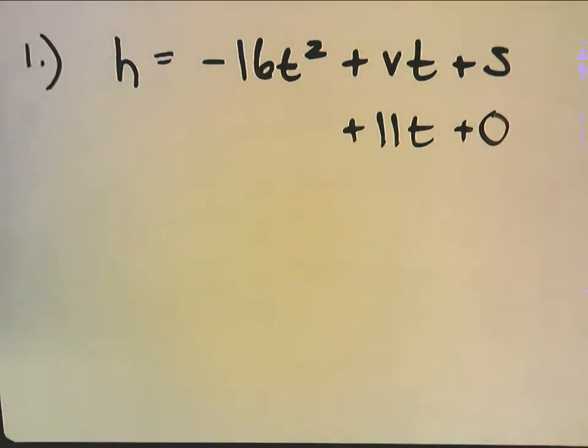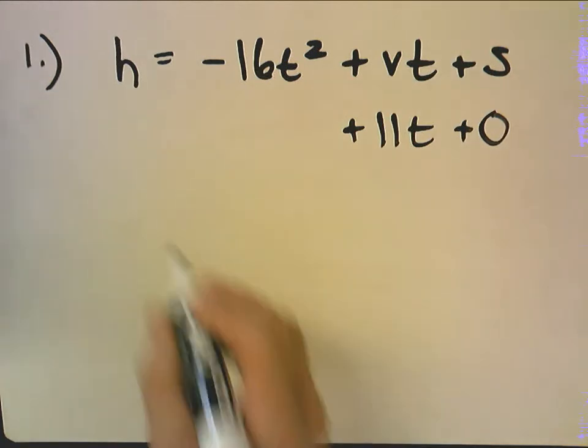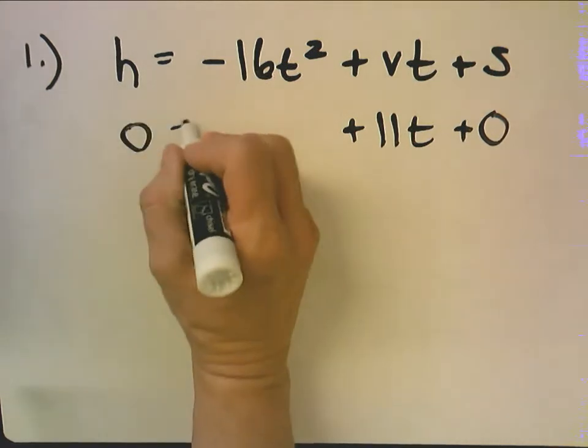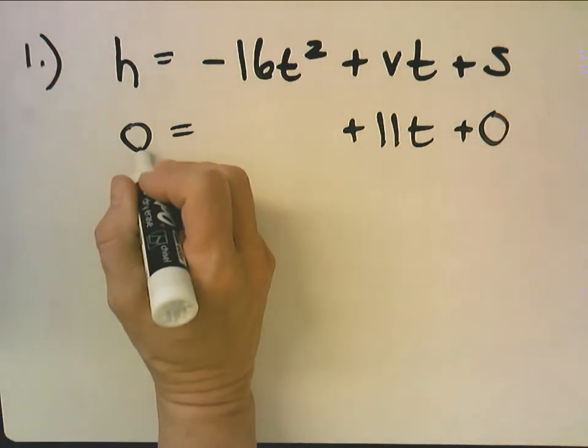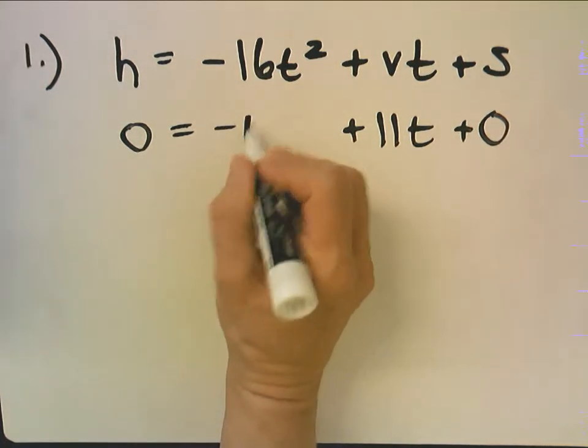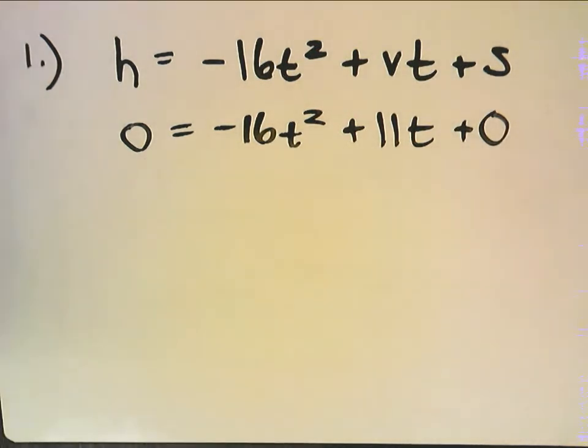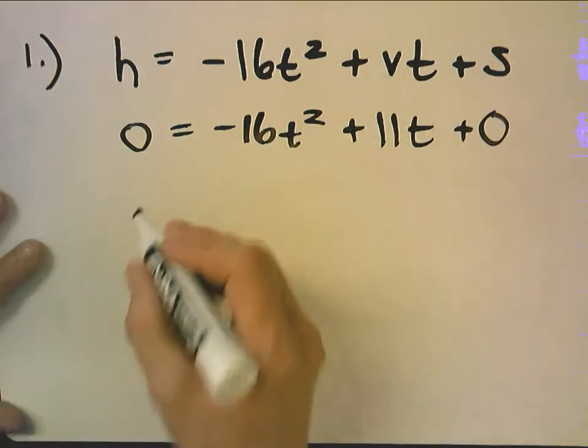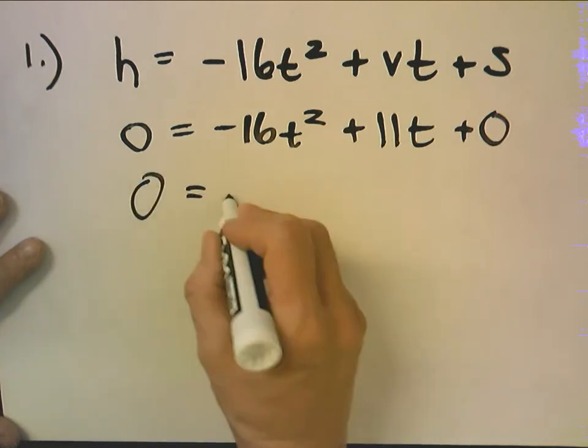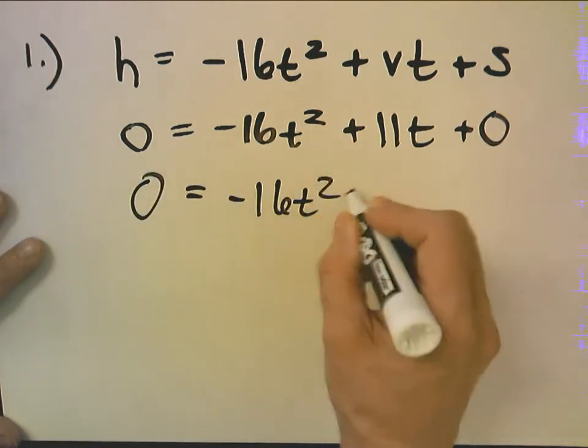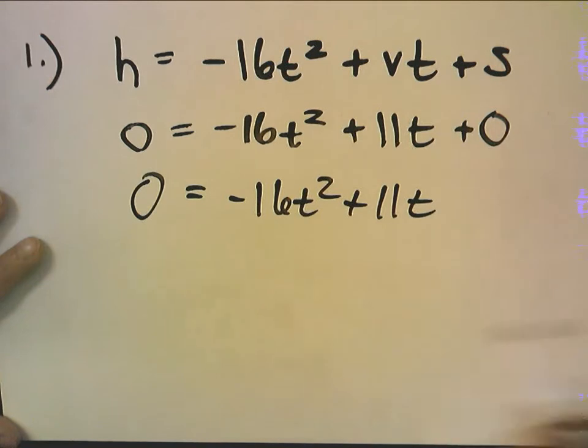And it says after how many seconds does the cat land on the ground, so the height that we're trying to find is when it lands on the ground. When it lands on the ground it's zero in height. So zero equals negative 16t squared plus 11t.